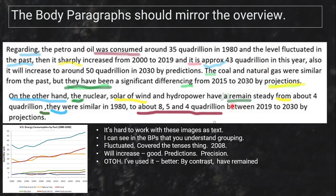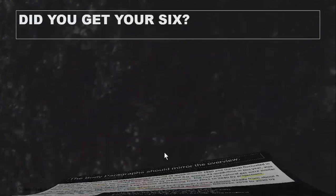There's an attempt to use the present perfect. She writes 'from about four they were similar in 1980... to about eight, five and four between 1990 to...' — we don't know what 8, 5, and 4 mean. You're seeing those numbers on the graph, but the person reading this doesn't see the graph. The numbers need context.